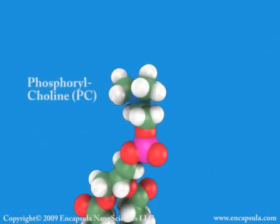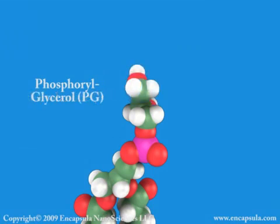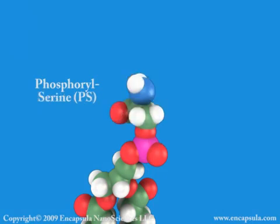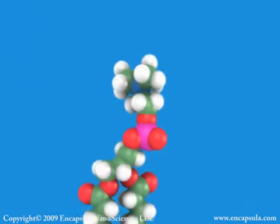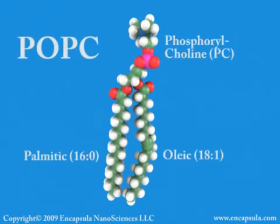The most common phospholipid head group found in nature is phosphorylcholine, or PC. Other head groups include phosphorylethanolamine, known as PE; phosphorylglycerol, known as PG; phosphorylinositol, known as PI; and phosphorylserine, known as PS. The PC and PE head groups have no charge, while the PG, PI, and PS head groups are negatively charged. The most common naturally occurring phospholipid is PC.